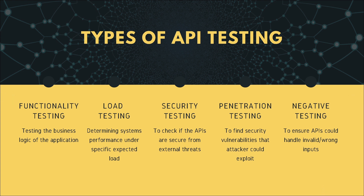Finally, we have negative testing — ensuring APIs can handle wrong or invalid input. For example, users should not be able to enter an invalid email format, or register without entering an email or password.